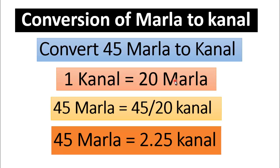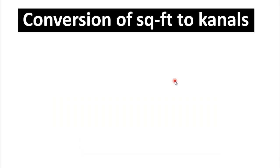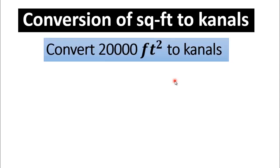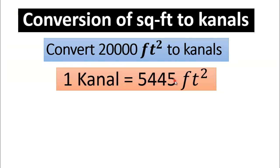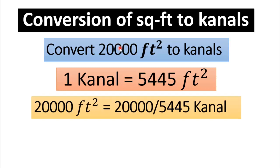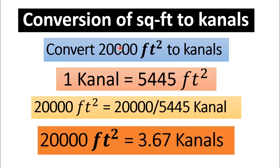Now we will discuss the conversion of square feet to canals. Let's take the example of converting 20,000 square feet into canals. Since one canal is equal to 5,445 square feet, to convert 20,000 square feet into canals, just divide by 5,445. After simple calculation, 20,000 square feet is equal to 3.67 canals.